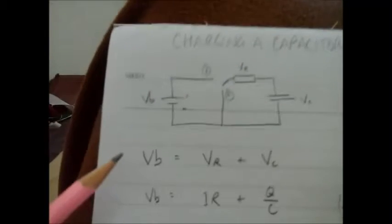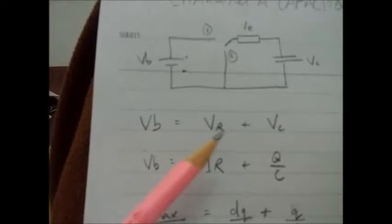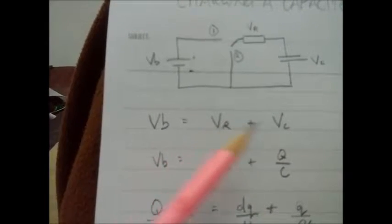Now, using Kirchhoff's laws, I can write the voltage battery must be equal to the voltage across the resistor plus the voltage of the capacitor.